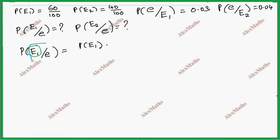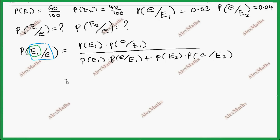Now, we need to find P of E1 given E. We have P of E1 given E equals P of E1 times P of E given E1, whole divided by P of E1 times P of E given E1 plus P of E2 times P of E given E2. Now we substitute values. P of E1 is 60 by 100, P of E given E1 is 0.03.